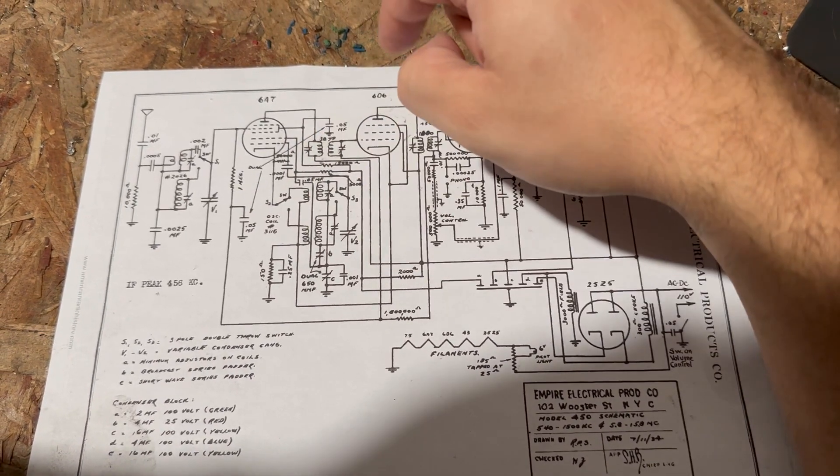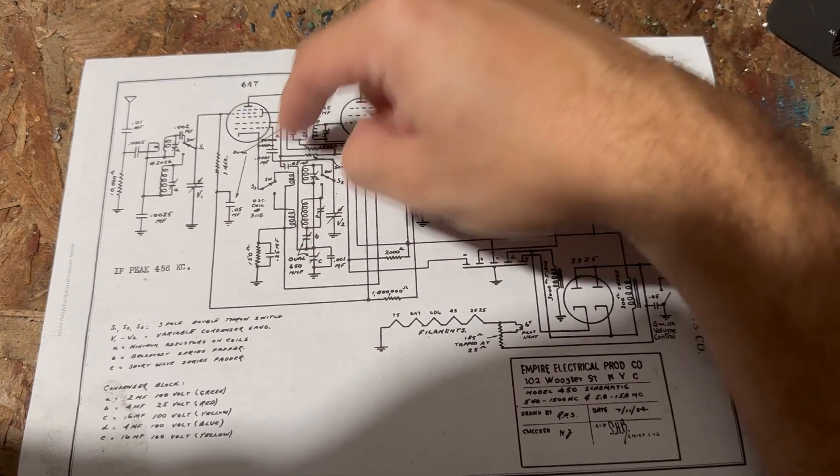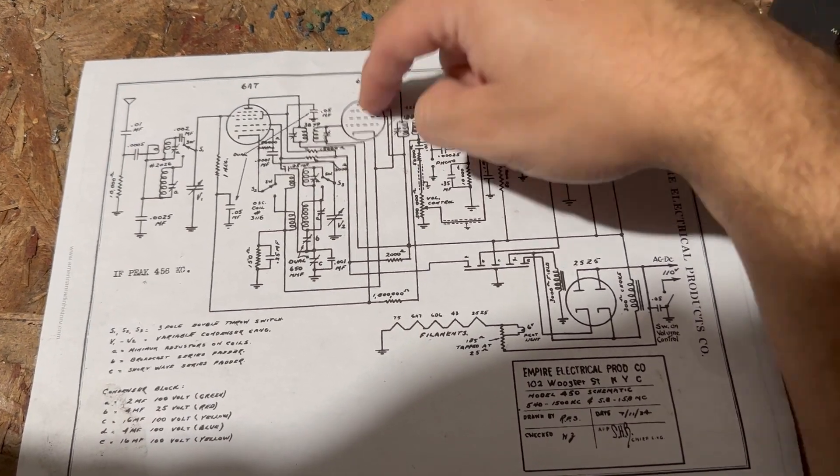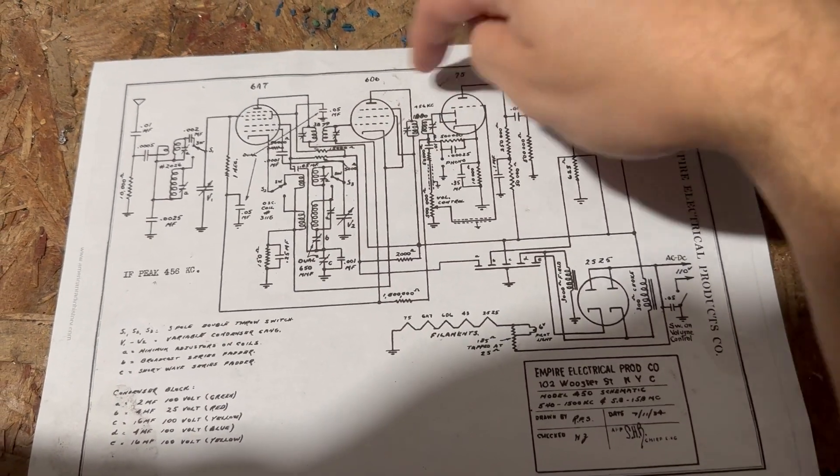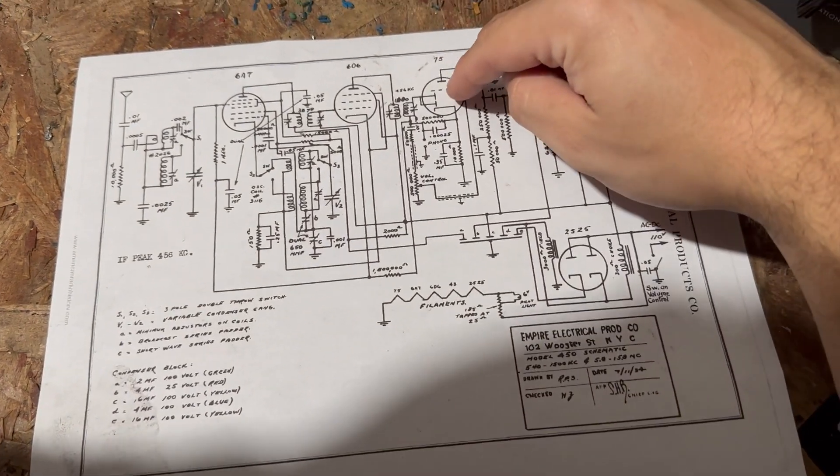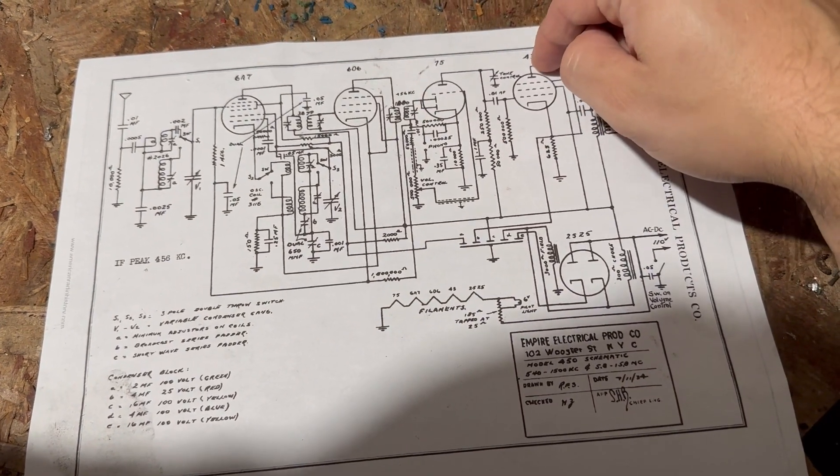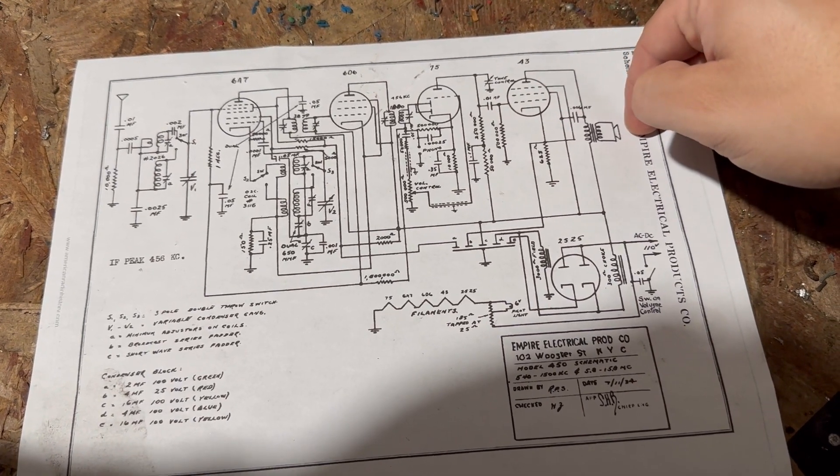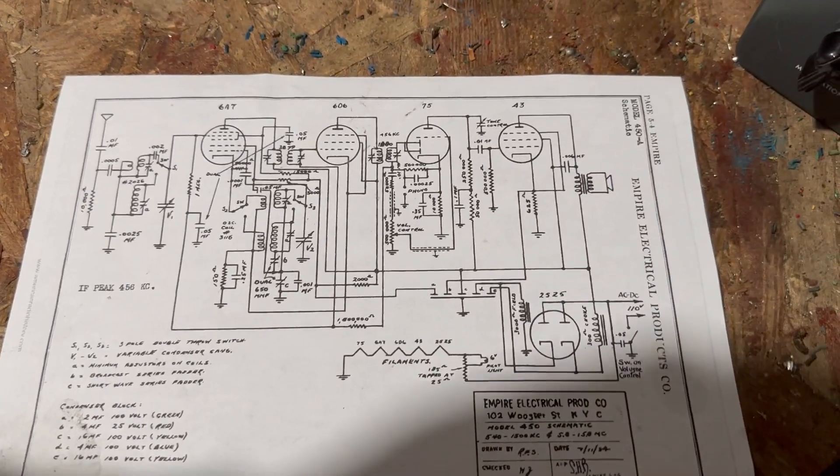What it then does is amplifies that signal over and over. In this case, there's only really two stages. Then this is a diode here and then it goes to the output, and you get that amplified 455 signal out of the radio.